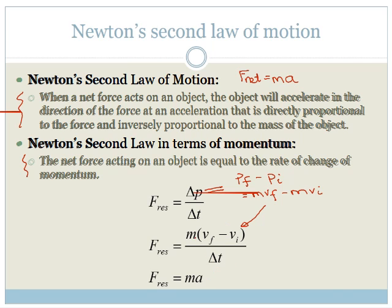But if we rearrange that a little bit more, we can write that out as M times VF minus VI over delta T. And that is the same as the change of velocity, VF minus VI over delta T.